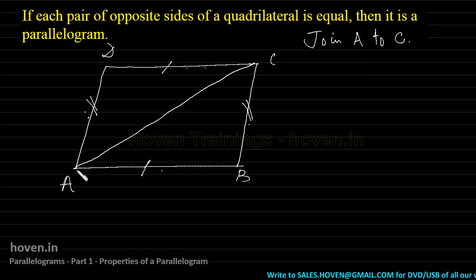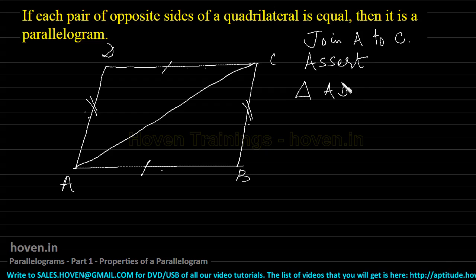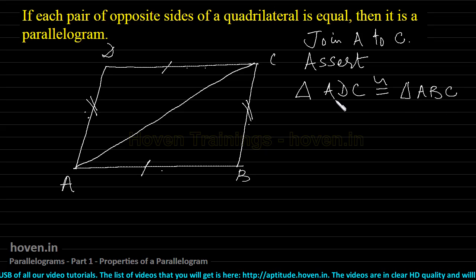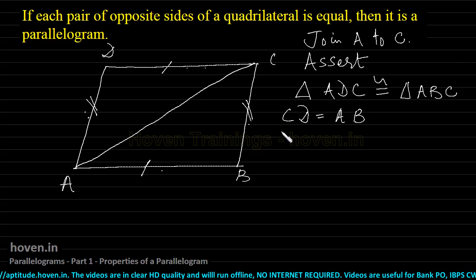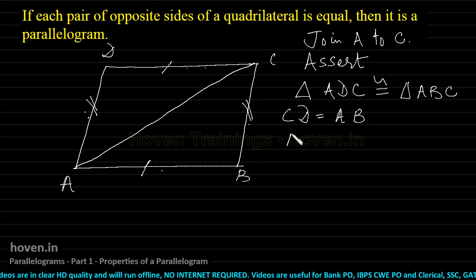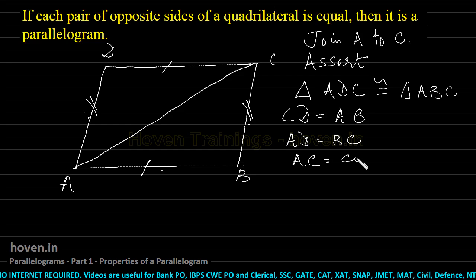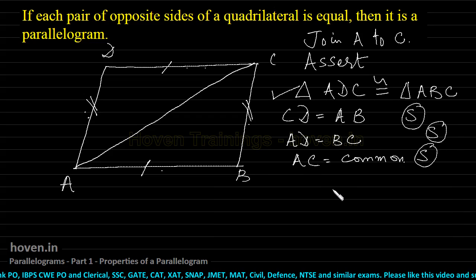When we join A to C, we get two triangles: ADC and ABC. We assert that triangle ADC is congruent to triangle ABC. They are congruent because CD is equal to AB, AD is equal to BC, and AC is common. So by the SSS rule, these two triangles are congruent. If they are congruent, then the corresponding angles have to be equal.